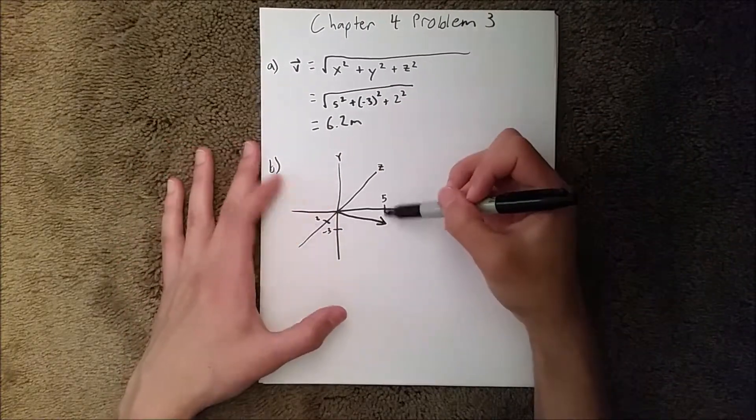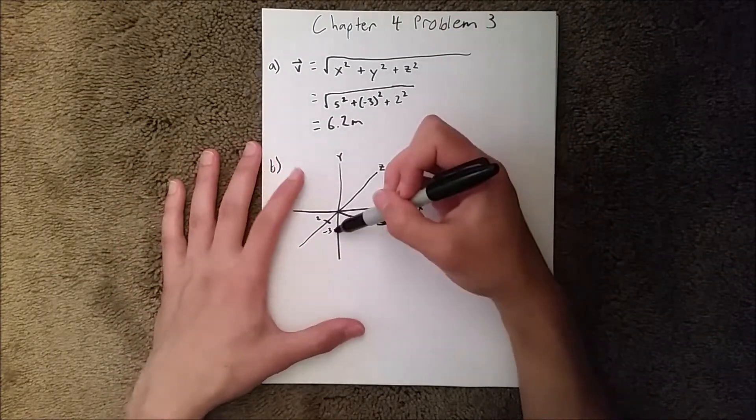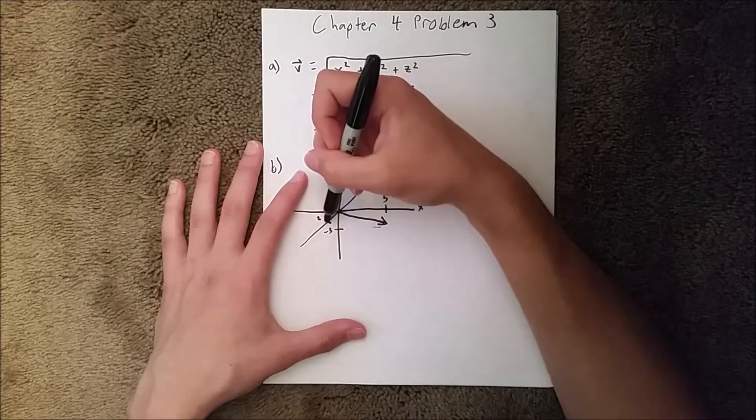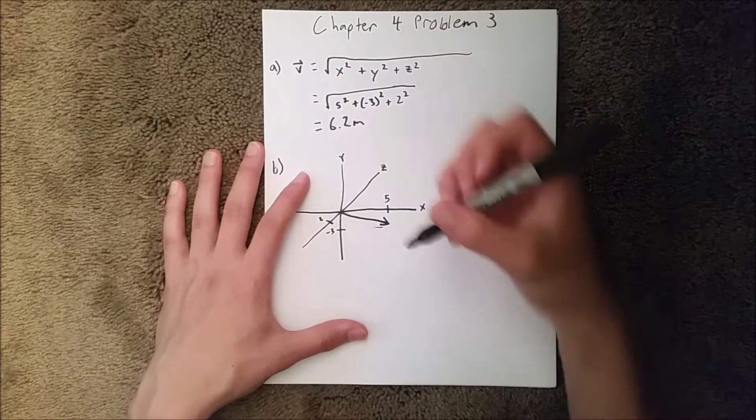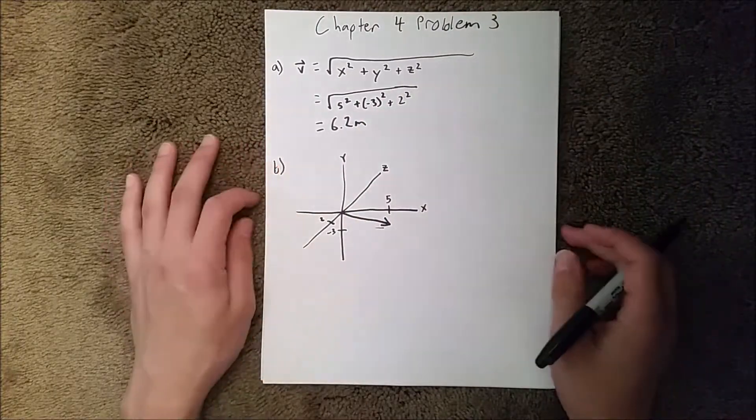So that way it's, see here, five units in the x, three units in the y, and then our z. That should probably come out more over here, but you get the idea.